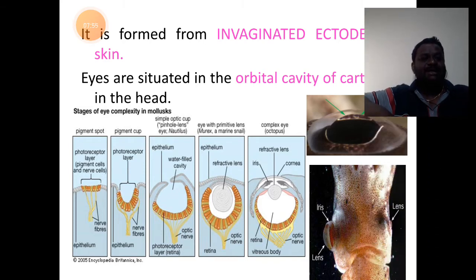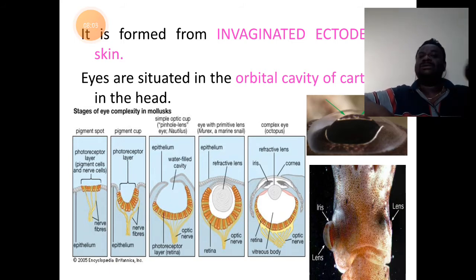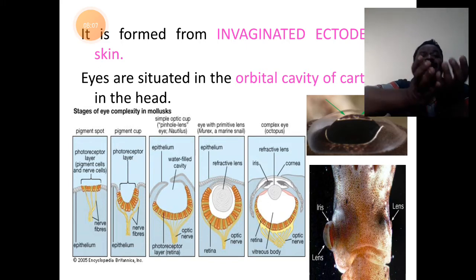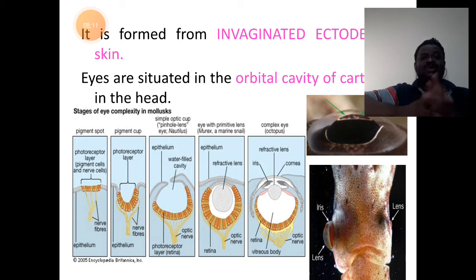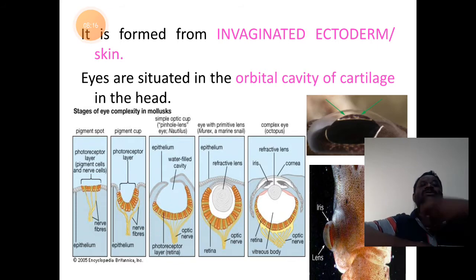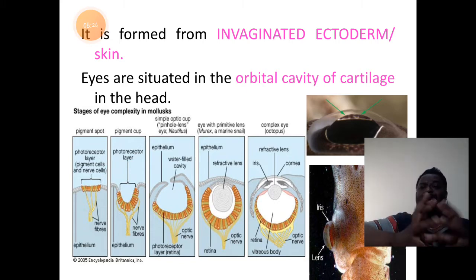The eye of cephalopod is formed from the ectoderm of this organism, that is the skin of the organism itself. It is just the invagination or infolding of the ectoderm or skin that will form the cavity to support the eye, giving rise to the structure of the eye.